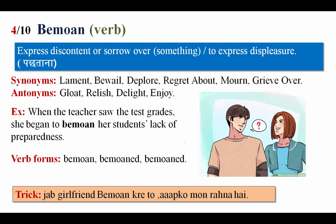The next word is bemoan. The meaning of bemoan is to express discontent or sorrow over something, to express displeasure. Synonyms: lament, bewail, deplore, regret about, mourn, or grieve over. Antonyms: glow, relish, delight, enjoy. Example: When the teacher saw the test grades, she began to bemoan her students' lack of preparedness — meaning the teacher felt the students had not prepared for the paper.